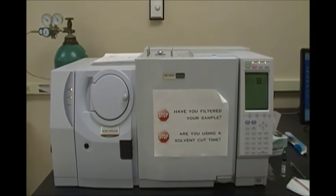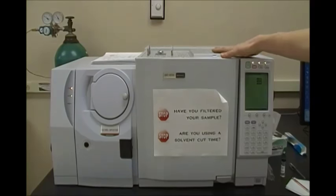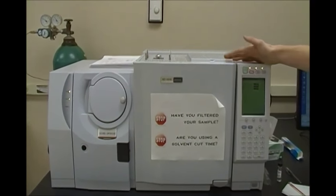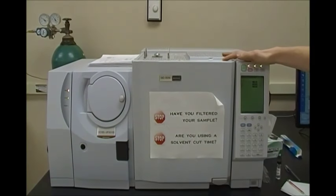Alright, so this here is our GC mass spec. In this box right here, this is our GC. Inside of here we have our column, which is filled with C18. That's going to be our stationary phase.